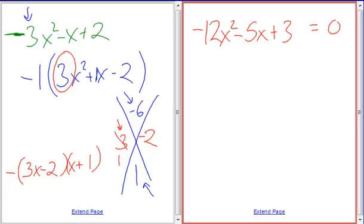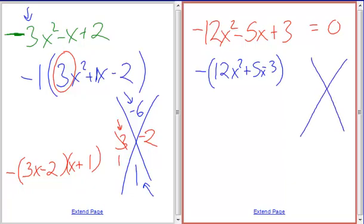Okay. So how do we start this problem out? Extract the negative. Thank you, Susan. So I extract out my negative. And what do I get now? 12x squared plus 5x minus 3. I'm going to put an x there. And then what? Negative. Negative. Thank you, Eleanor.